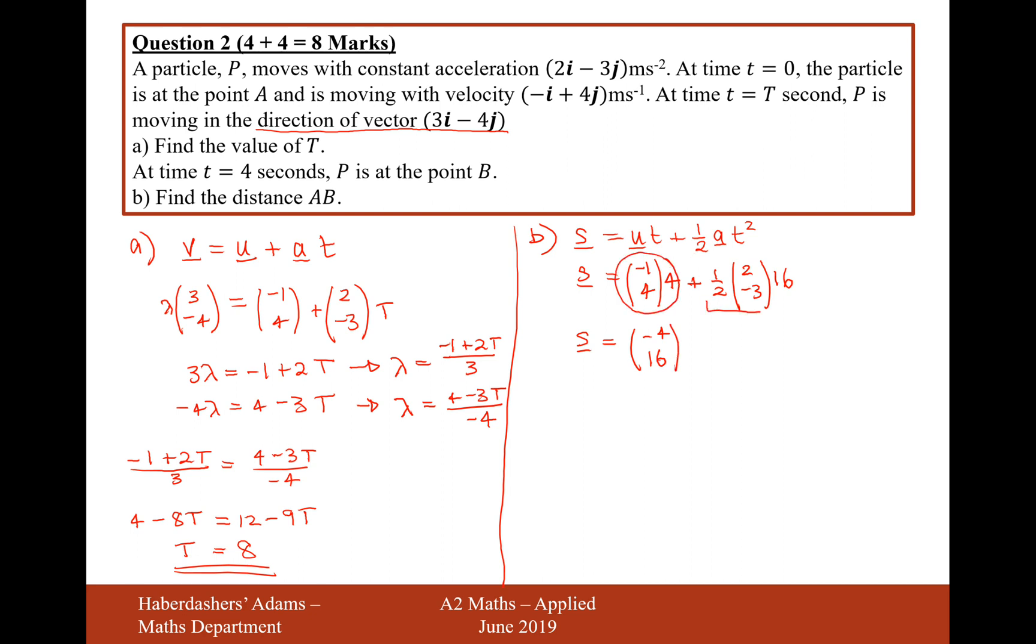So it's going to be 8 times the vector. So it's going to be 8, sorry no, it's 16, -24. So let's add these two together. So it's going to be 12 and -8.